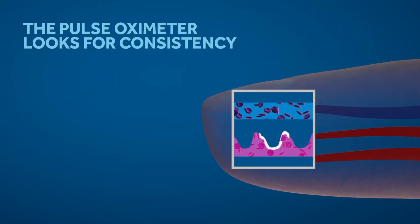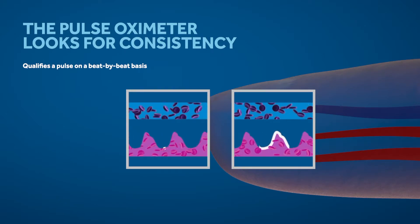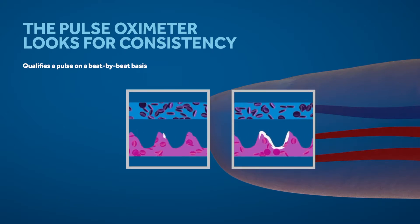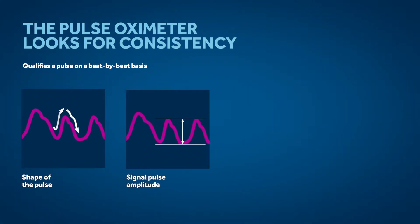NELCOR pulse oximetry technology identifies and qualifies a pulse on a beat-by-beat basis. The pulse oximeter looks for consistency in the shape of the pulses including signal pulse amplitude or height of the pulse and the frequency of the pulses.